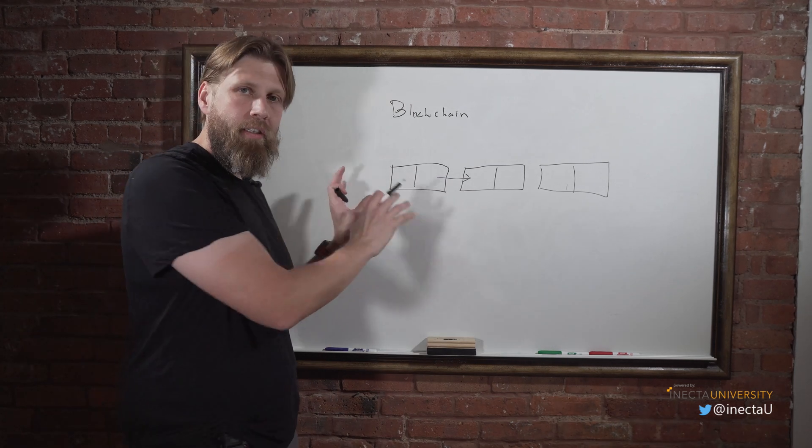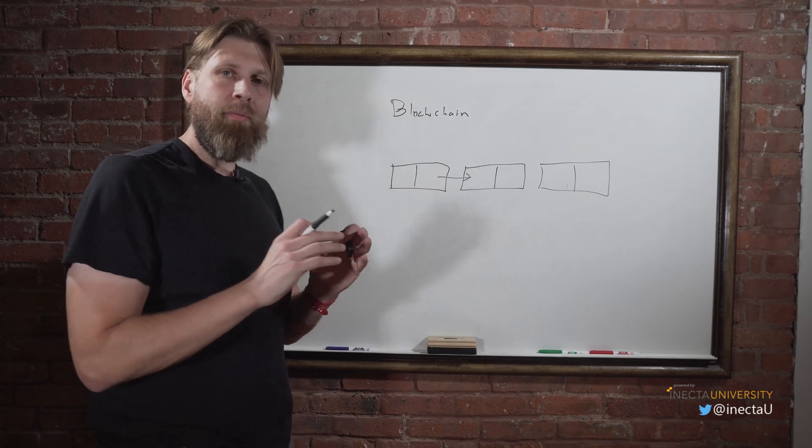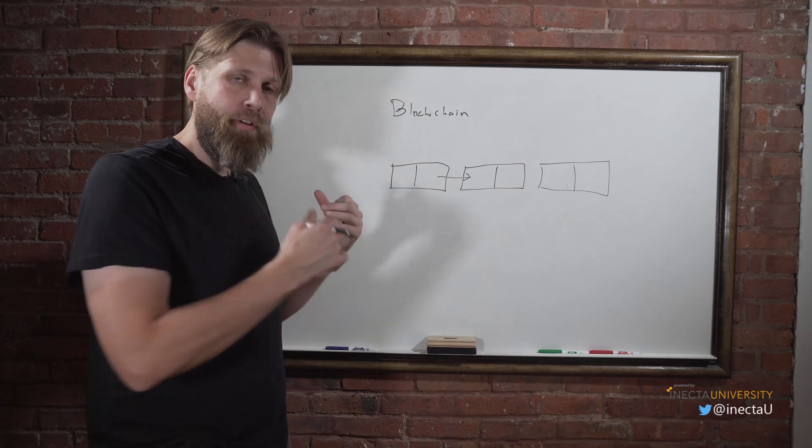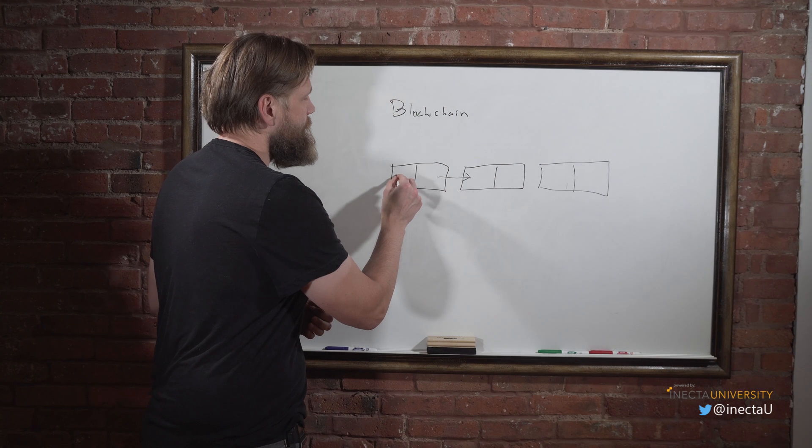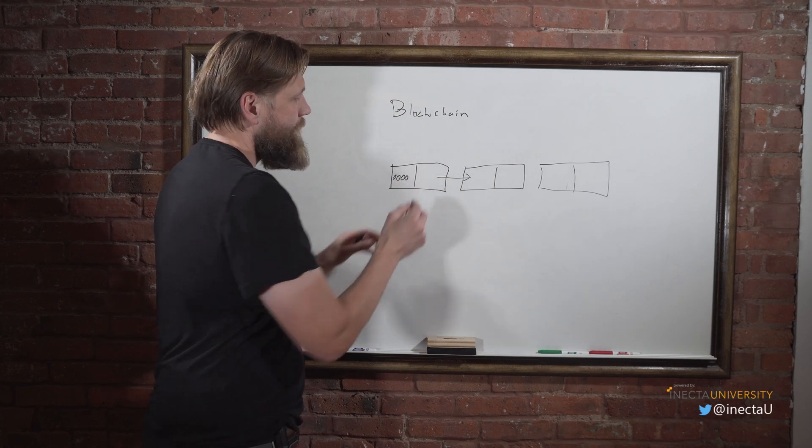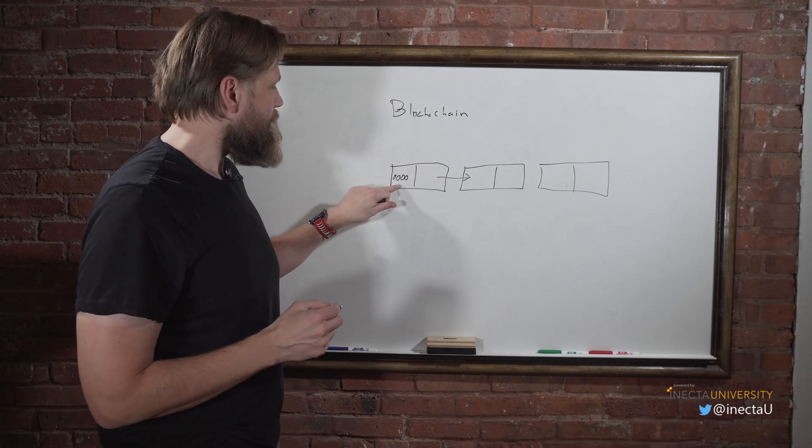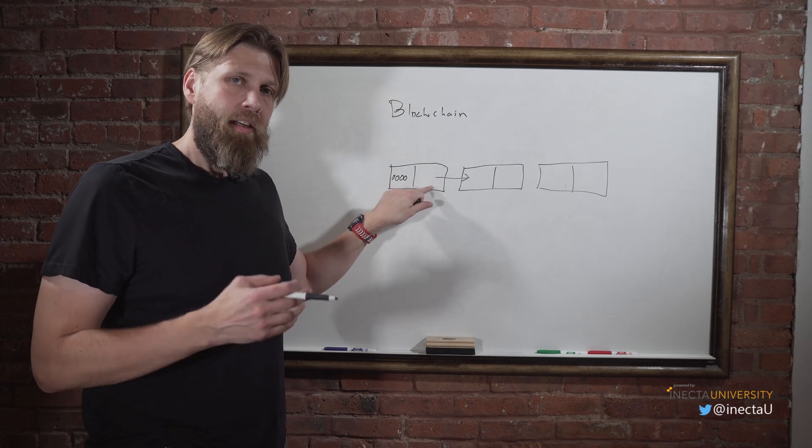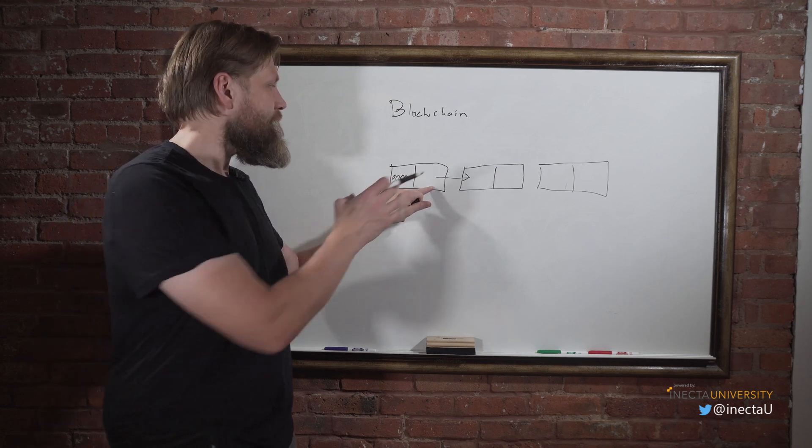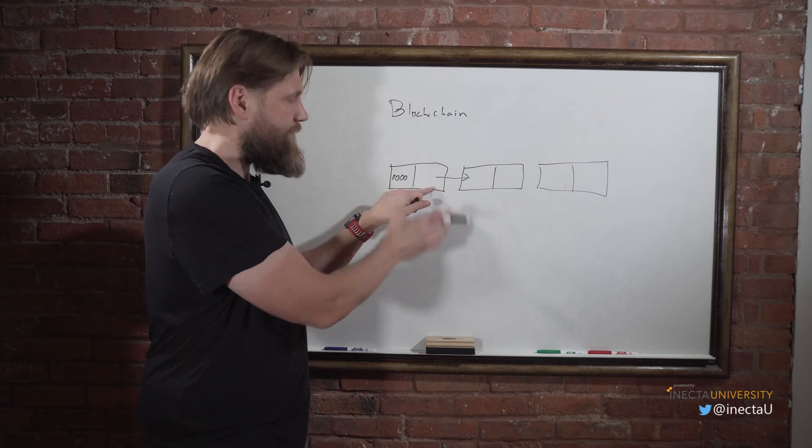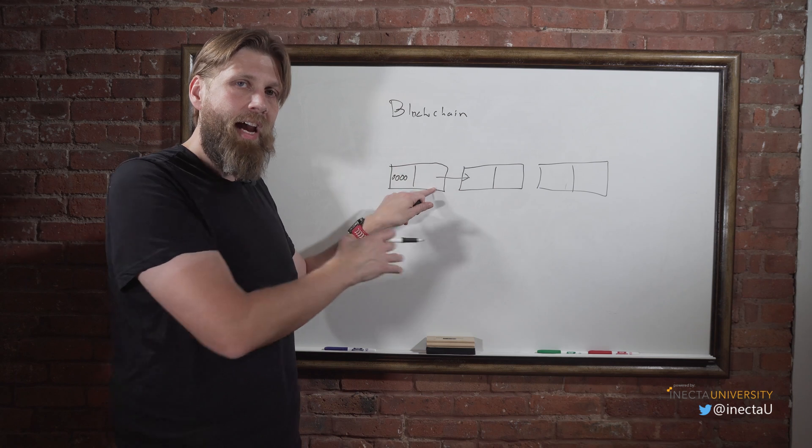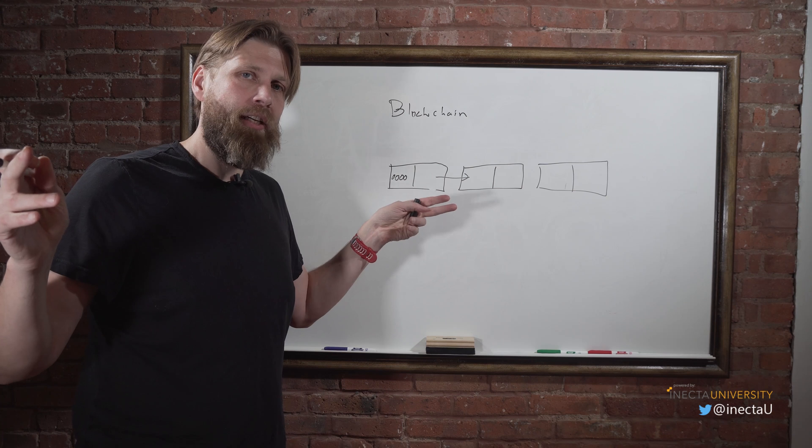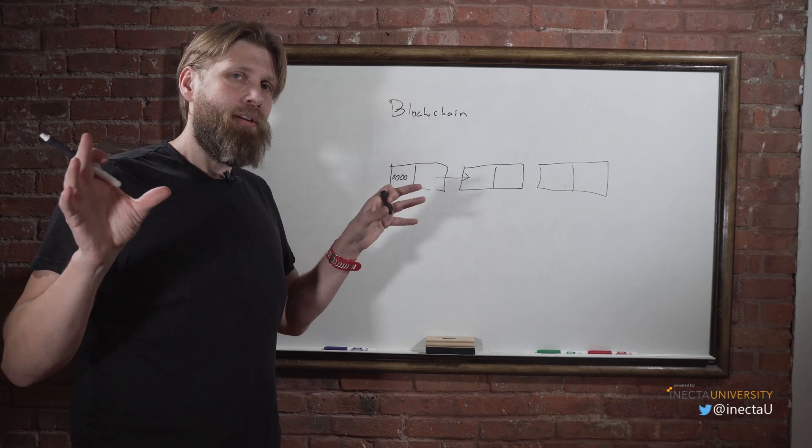The first block in the network, which is the first data point in the network, contains no block before it. It's the first entry, so the address of the previous block is zero. The address of the current block - basically what the system does is it takes the size of this block, whatever is contained in the data, and does a mathematical algorithm and hashes out a long string which is the address or signature of the block.